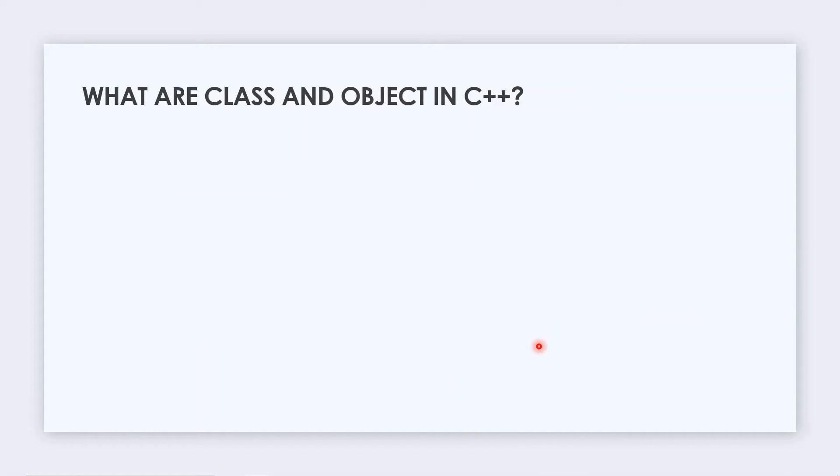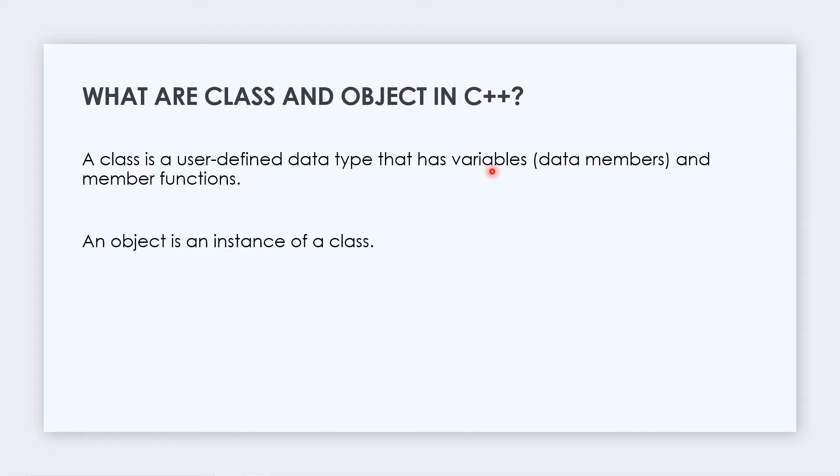The next question is: What are classes and objects? A class is a user-defined data type that has variables and member functions. An object is an instance of a class. Let's say we have class A which has a private specifier, int data as its variable, and void function as its member function. The member function is void func and the variable is int data, which are data members of this class.